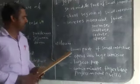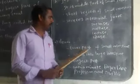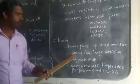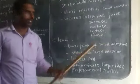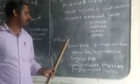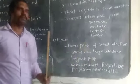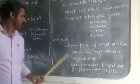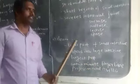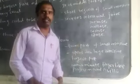Ileum is the lower part of our small intestine. It opens into the large intestine. It is the longest part of our alimentary canal. Ileum contains many finger-like projections called villi.